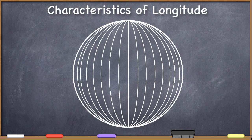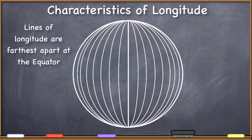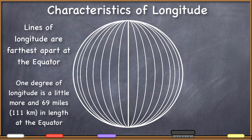Just before I close here, let me give you a couple of characteristics of the lines of longitude and contrast them with the lines of latitude. Remember that the lines of latitude were parallel, but that is not the case with the lines of longitude. The lines of longitude are farthest apart at the equator. One degree of longitude at the equator is a little bit more than 69 miles in length, but then that distance shrinks to zero.